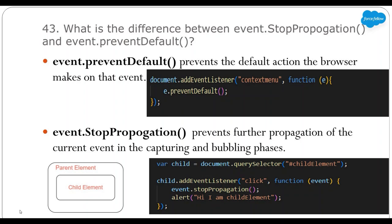So to summarize: event.stopPropagation() will prevent parent handlers from being called, and event.stopImmediatePropagation() will prevent other handlers on the same element from being called.